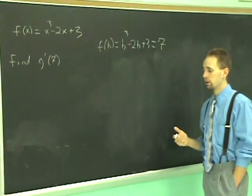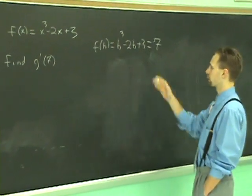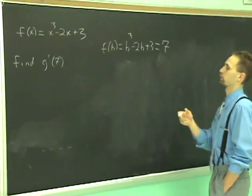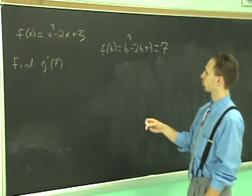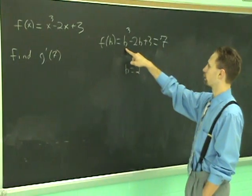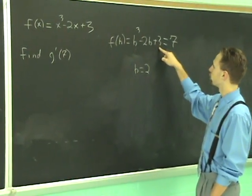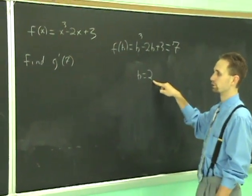Since I already have it prepped, I know what the answer is. We don't have to mess around with actually going through the algebra. The only solution to this is B equals 2. Alright, you plug it in, you get 8 minus 4 is 4 plus 3 is 7. So, B equals 2 is a solution to this.